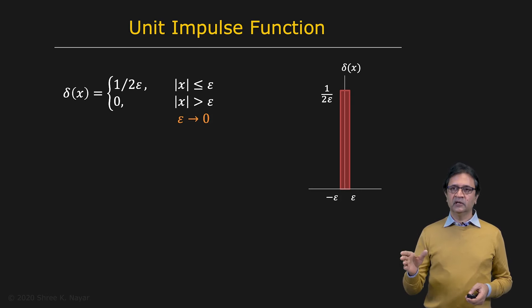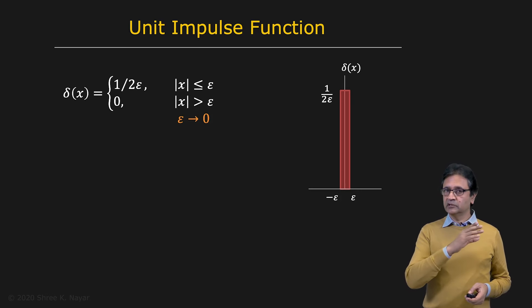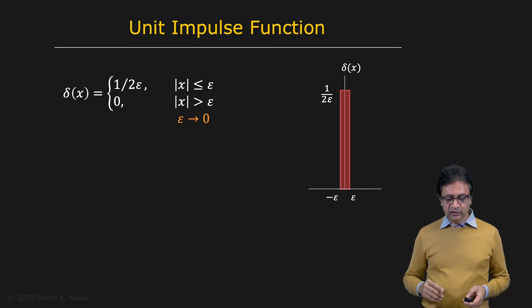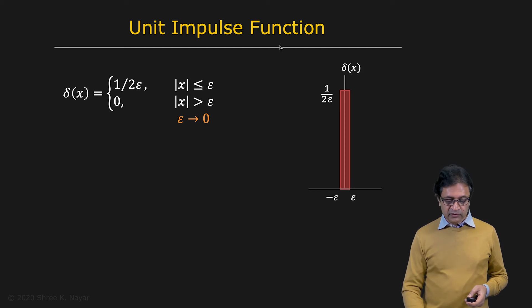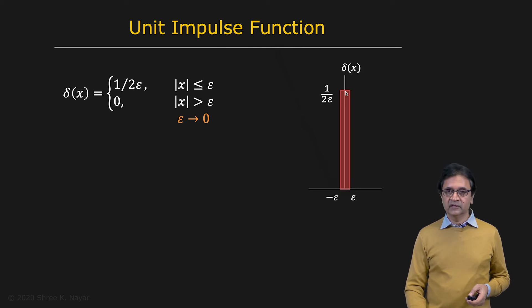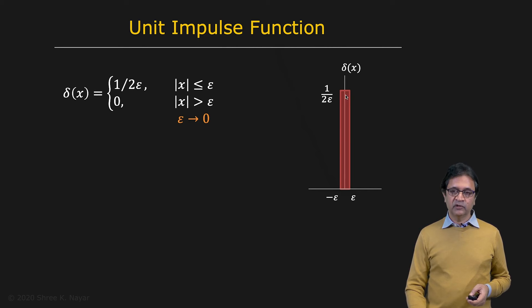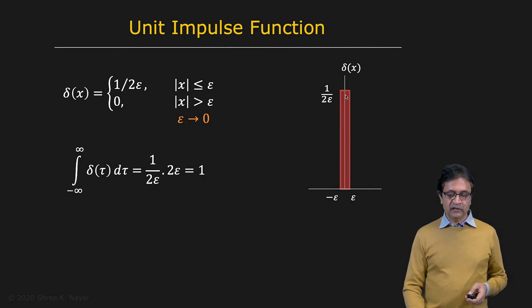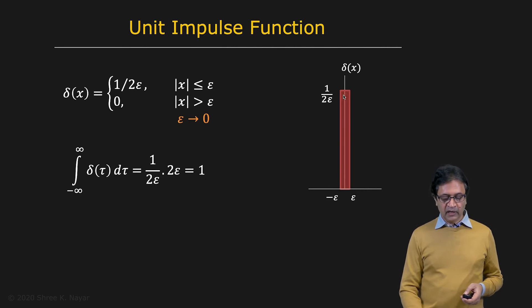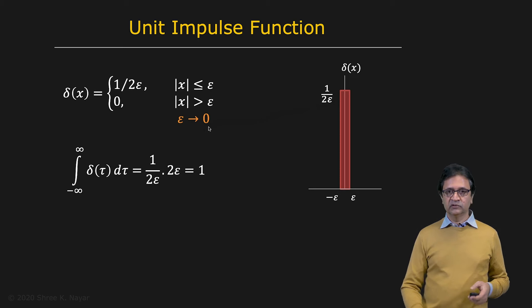We talked about this as a delta function in a previous lecture — it's the same concept. The unit impulse function is infinitesimally thin and infinitely tall. Its width is two epsilon and its height is one over two epsilon, so its area is always one as epsilon tends to zero. So really thin, really tall, area equal to one.